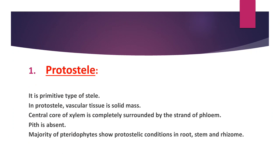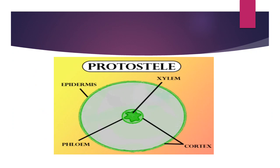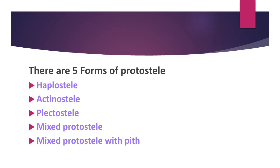Protostele: it is a primitive type of stele. In a protostele, the vascular tissue is a solid mass — a central core of xylem is completely surrounded by a strand of phloem. Pith is totally absent in this type. The majority of tracheophytes show protostelic condition in root, stem, and rhizomes. You can see in the diagram: endodermis, cortex, phloem, and the innermost xylem. There are five forms of protostele: haplostele, actinostele, plectostele, mixed protostele, and mixed protostele with pith.